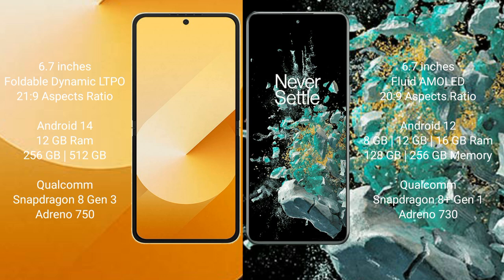Samsung Galaxy Z Flip 6 comes with 12GB RAM and 256GB or 512GB internal storage, Qualcomm Snapdragon 803 processor, and NGP Antino 750. OnePlus 10T comes with 8GB, 12GB, or 16GB RAM and 128GB or 256GB internal storage, Qualcomm Snapdragon 801 processor, and NGP Antino 730.